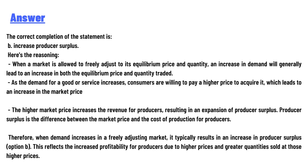The correct answer is (b): increased producer surplus. Here is the reasoning: when a market is allowed to freely adjust to its equilibrium price and quantity, an increase in demand will generally lead to an increase in both the equilibrium price and quantity traded.